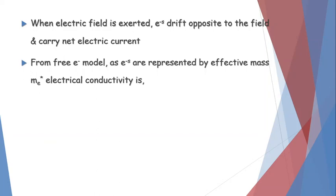From the free electron model, since electrons are represented by effective mass Me*, the electrical conductivity can be written as σ_E = N e² τ_E / Me*. Here, τ_E is the lifetime of the electron and Me* is the effective mass. This is the general equation derived from the free electron model.